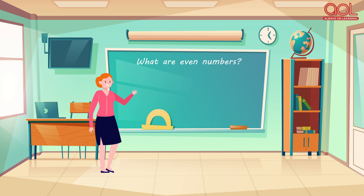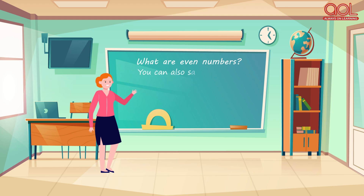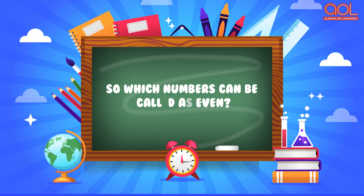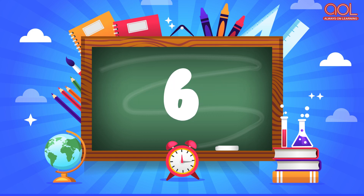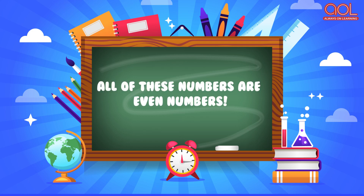What are even numbers? Even numbers are numbers that can be divided into equal parts. You can also say that even numbers are the numbers which can be divided by 2. So, which numbers can be called even? 0, 2, 4, 6, 8 — all of these numbers are even numbers.